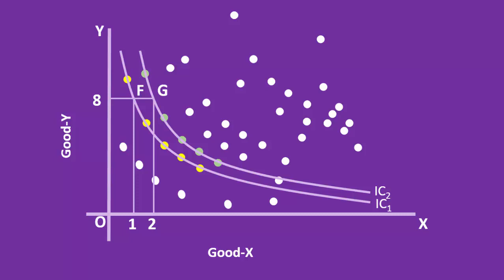So, our consumer prefers G over F. This is his preference. He is not indifferent between these two. When F and G are offered to him, he categorically prefers G. This is known as preference hypothesis.